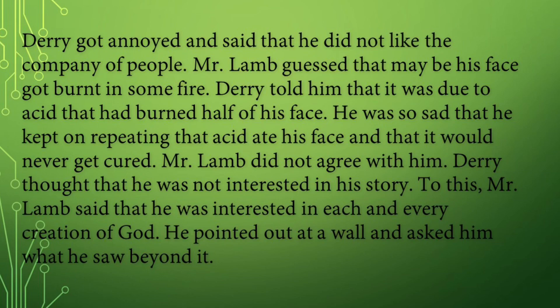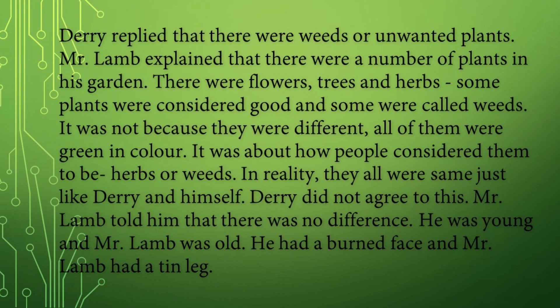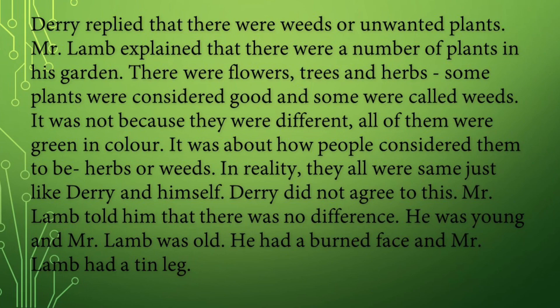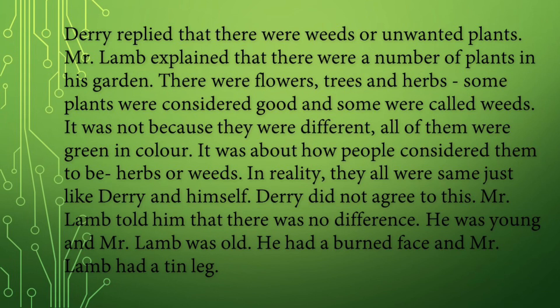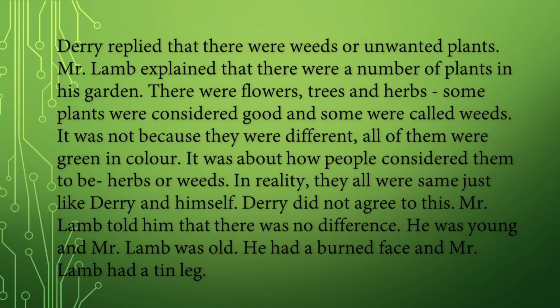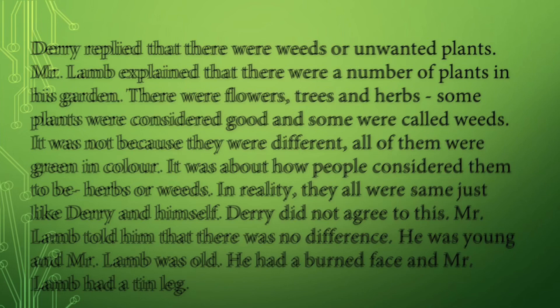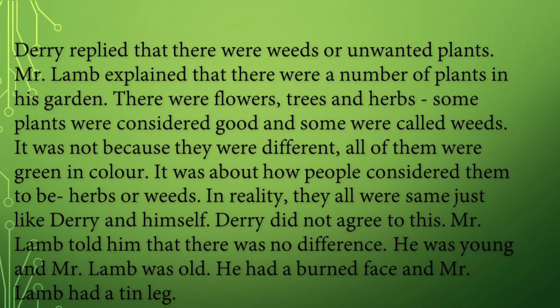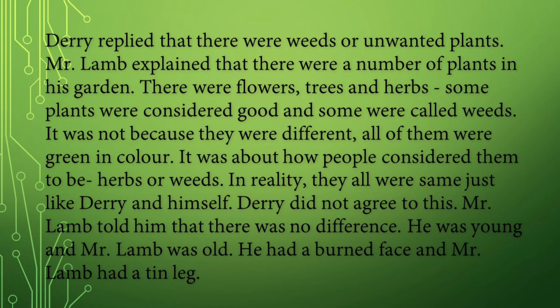Mr. Lamb pointed at a wall and asked him what he saw beyond it. Derry replied that there were weeds or unwanted plants. Mr. Lamb explained that there were a number of plants in his garden — flowers, trees and herbs. Some plants were considered good and some were called weeds, not because they were different. All of them were green in color; it was about how people considered them — herbs or weeds. In reality, they were all the same, just like Derry and himself. He told him there was no difference: he was young and Mr. Lamb was old; he had a burnt face and Mr. Lamb had a tin leg.